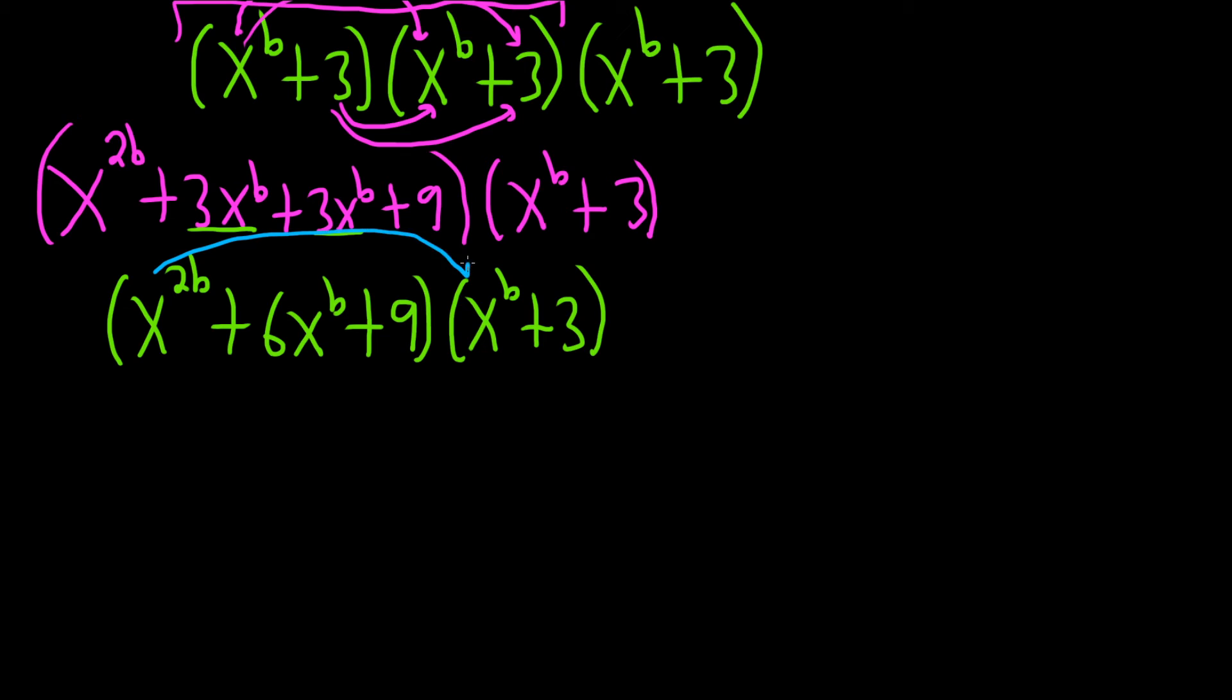So x to the 2b times x to the b is x to the, well you add the exponents. So 2b plus b is 3b. x to the 2b times 3 will give us plus 3x to the 2b.